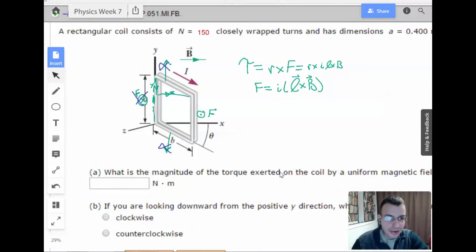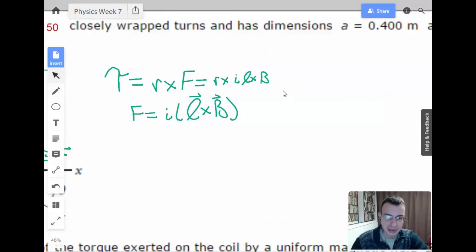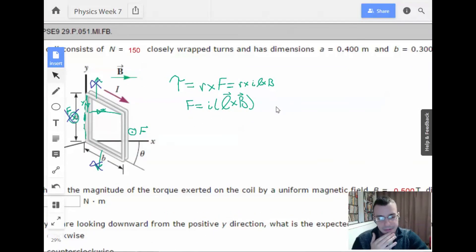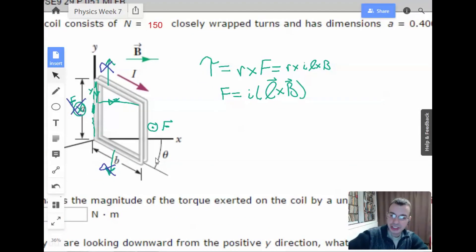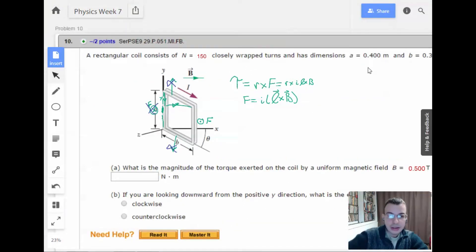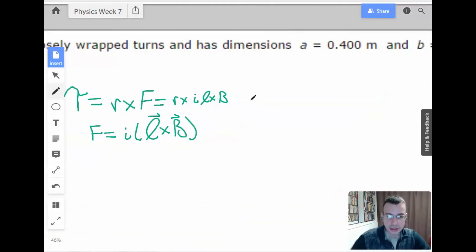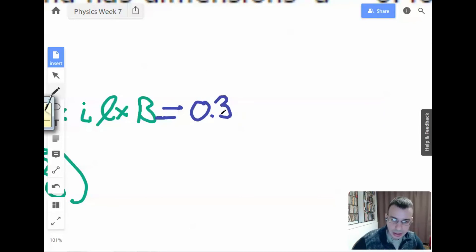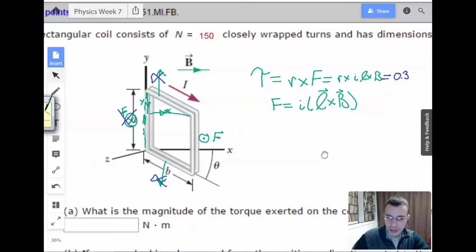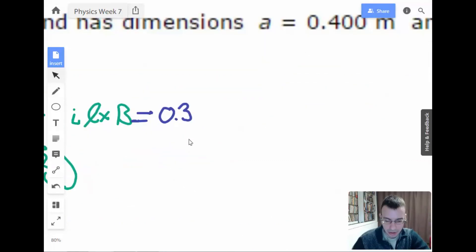Maybe we can just plug in numbers and get an answer. We need to find out the distance from the point of rotation, which is going to be b. So that's what our r is going to be, 0.3 meters. Now I'm finding this for just one coil. After I find it for one coil, they're all going to be the same so I'll multiply by the number of coils. The length of the current carrying wire is actually going to be a, so that's going to be 0.4.